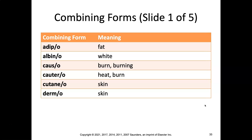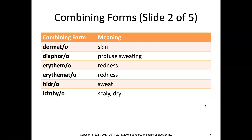Now on to combining forms. Our equation is combining root plus combining vowel equals combining form. Notice that there are two different ones for skin right off the bat — cutane/o versus derm/o — and they are very different. Watch out for redness as well because there are two for that. Also note ichthy/o meaning scaly dry — notice the unusual spelling I-C-H-T-H-Y. Make sure you study that one.